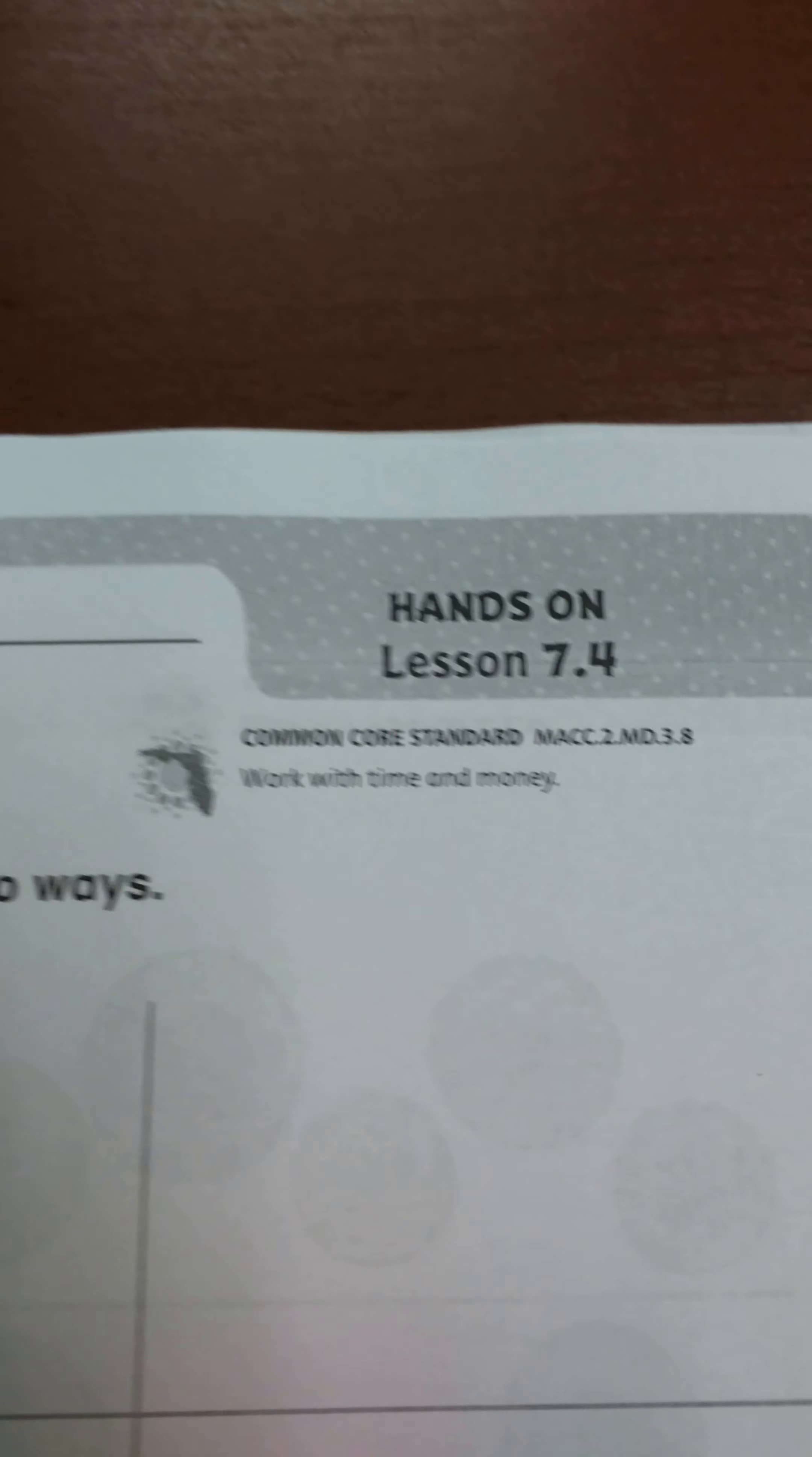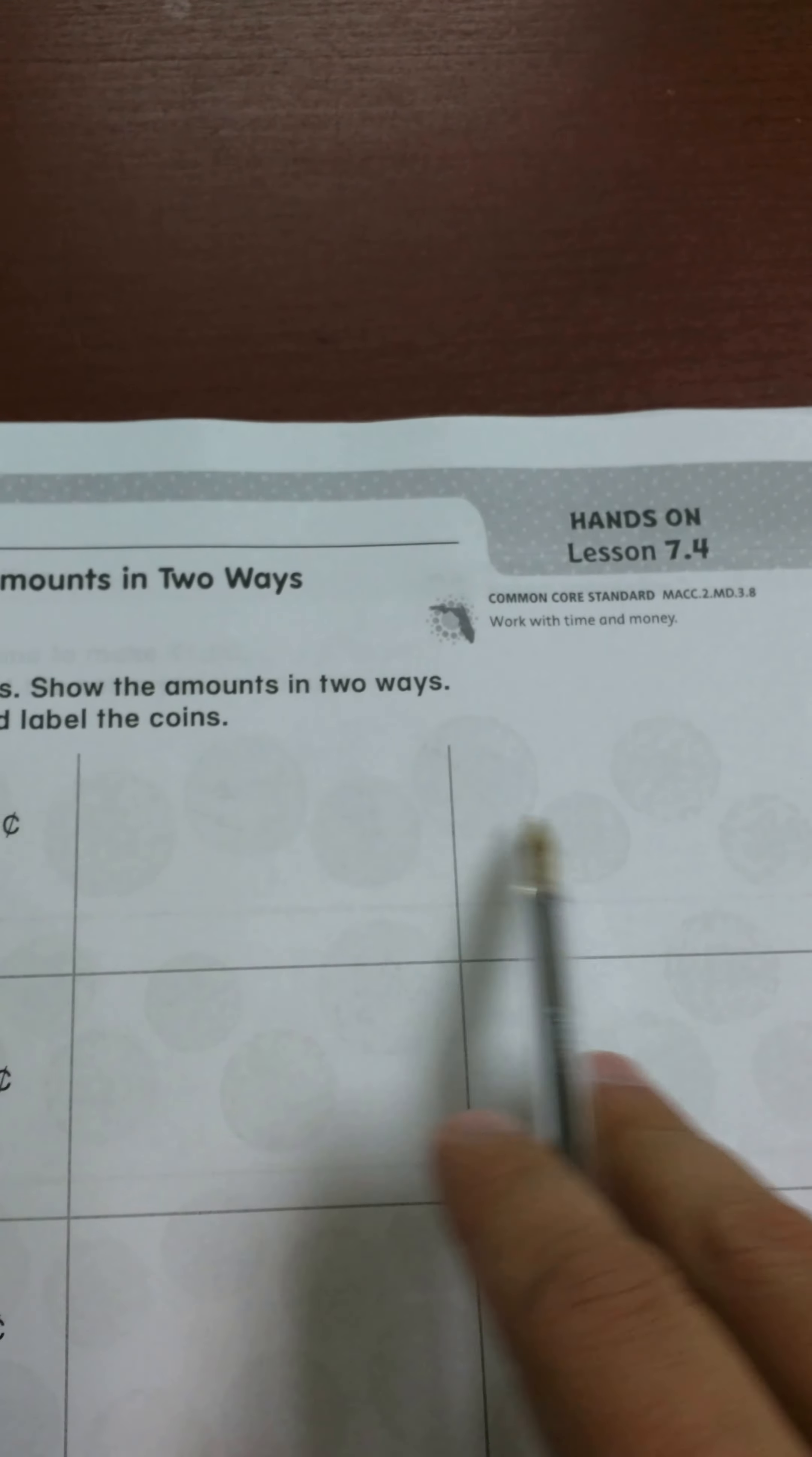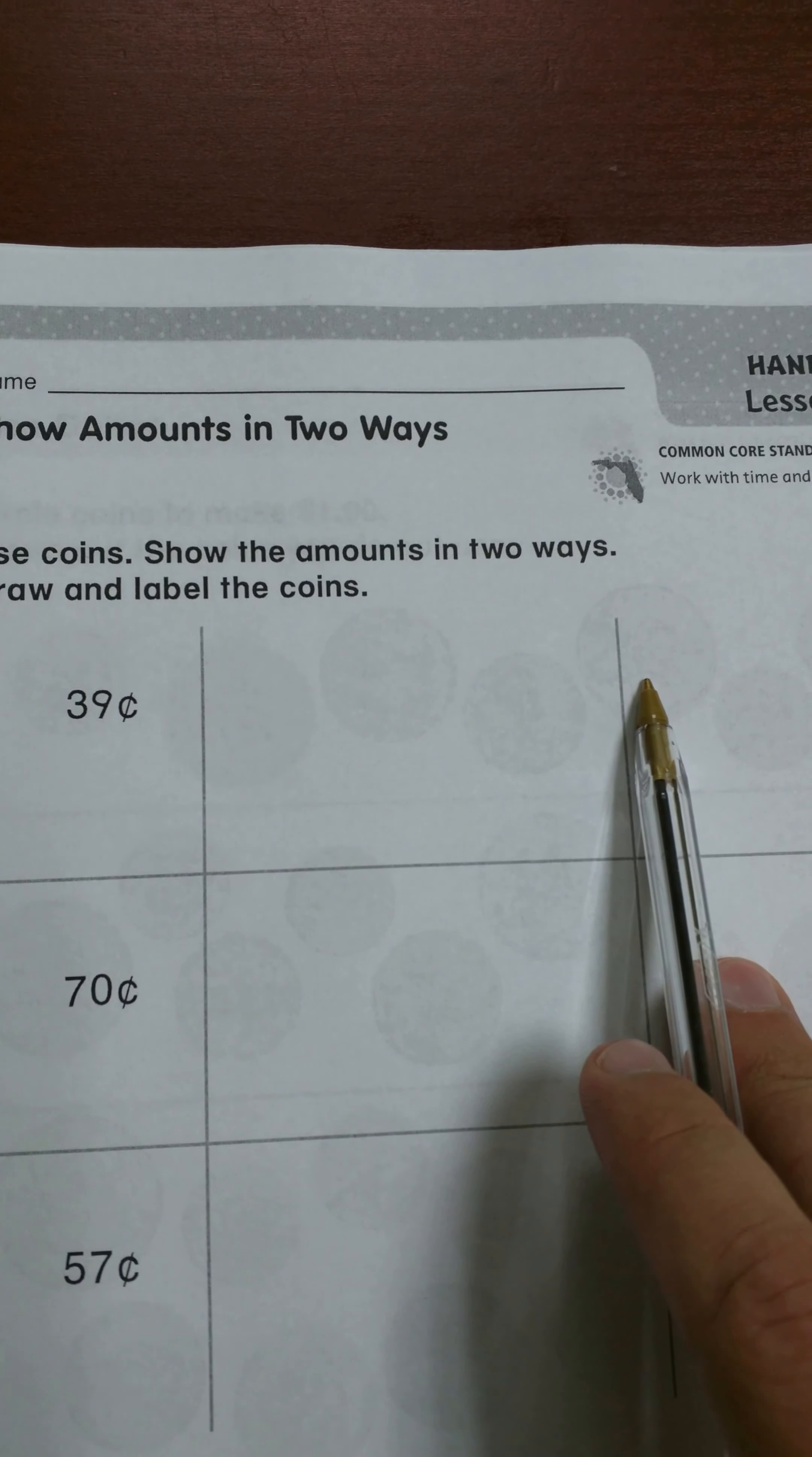Second grade Go Math lesson 7.4, and today we're going to show amounts of money in two ways. It says use coins, show the amounts in two ways, draw and label the coins. So we have 39 cents and we have two boxes in these two areas here. We are going to make 39 cents two different ways. Now we're going to go ahead and get started.